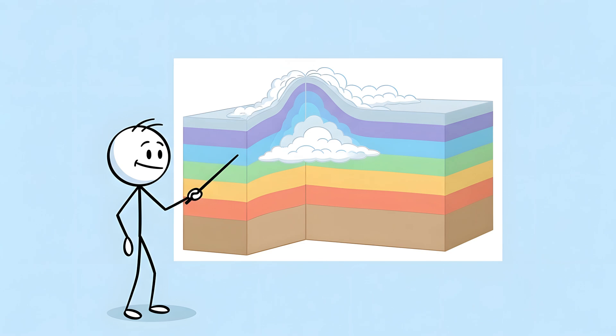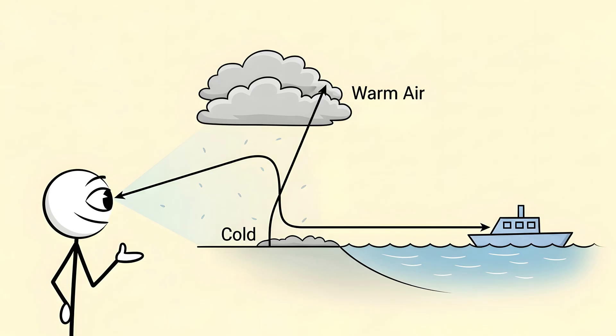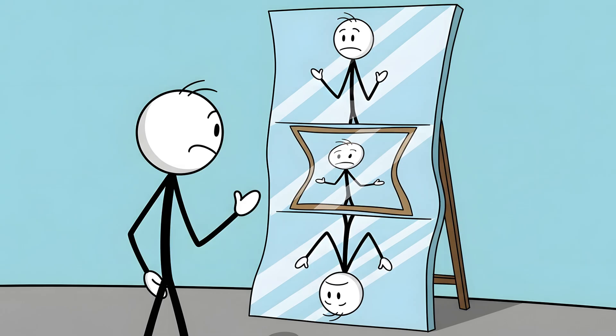This glitch is caused by an atmospheric lasagna. A layer of cold, dense air gets trapped beneath a layer of warmer, less dense air. This is called a thermal inversion. When light from a distant object, a real boat, a real island, a real chunk of distant coastline, travels through these layers. It gets bent. And not just bent, but grotesquely twisted. The boundary between the cold and warm air acts like a refracting lens, a powerful, chaotic funhouse mirror. It can stretch, compress, and flip images.